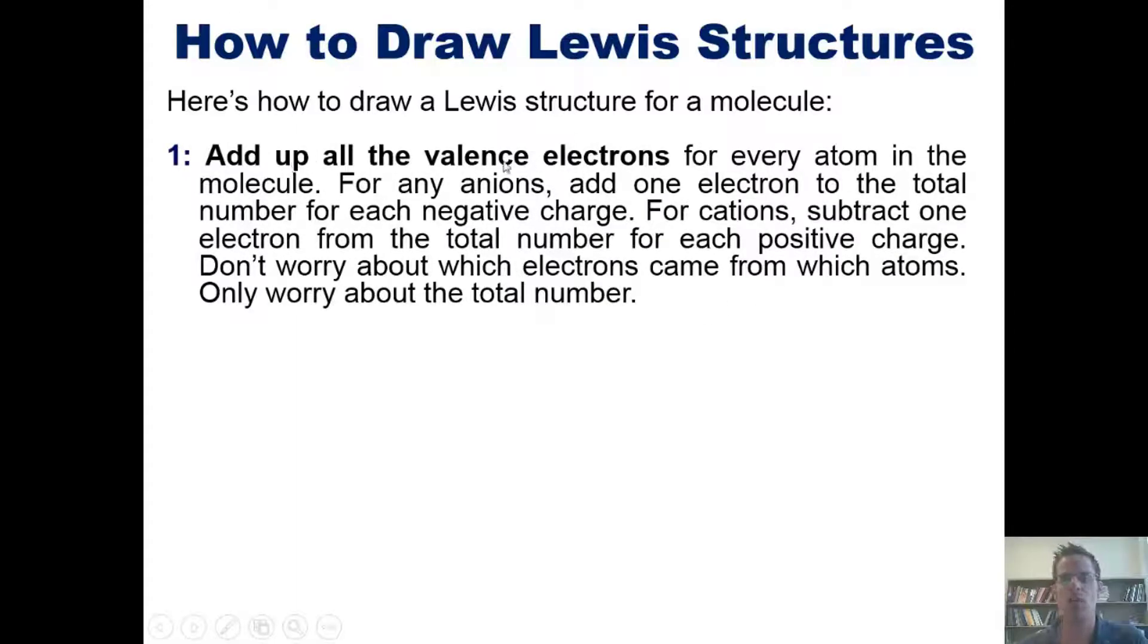To draw Lewis structure for a molecule, we first of all have to add up all the valence electrons for every atom in the molecule. For anions, add one electron to the total number for each negative charge. For cations, subtract one electron from the total number for each positive charge. Don't worry about which electrons came from which atoms, only worry about the total number.